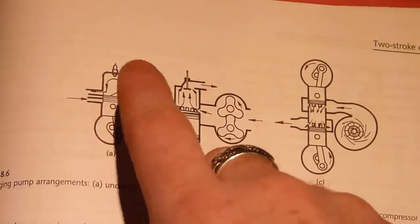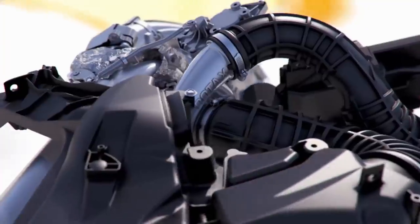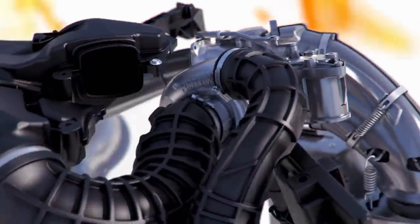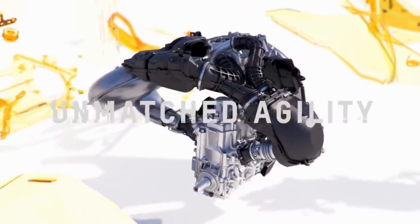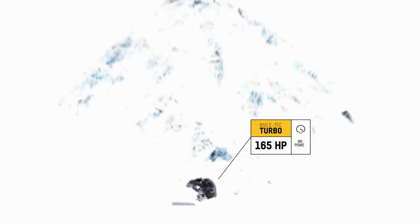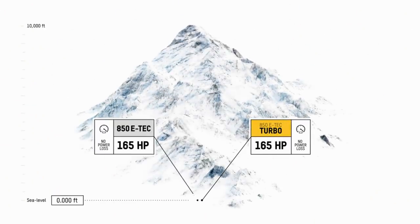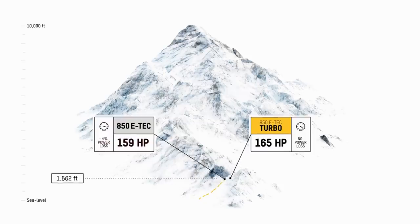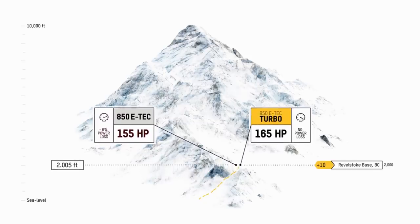Incredible power at elevation, and does it all at half the additional weight of a Summit 850 E-Tech with an aftermarket kit. With instant response, riders have full use of the 850 E-Tech's 165 horsepower up to 8,000 feet.